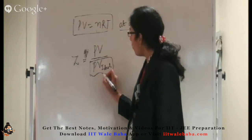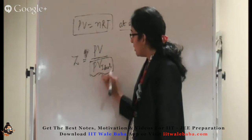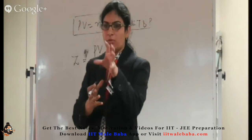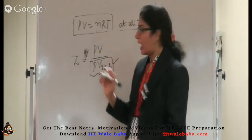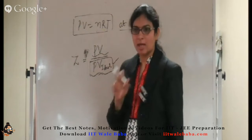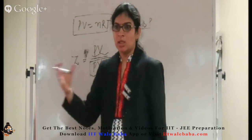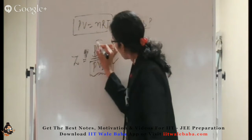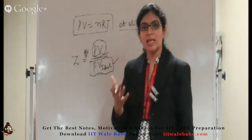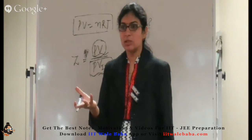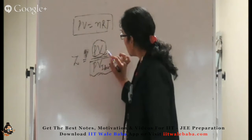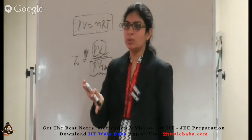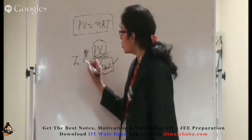PV should remain constant. PV here refers to PV of real gases. When we compare experimental results with theory, we performed experiments on different gases and found that this particular quantity, though it should remain constant, does not. It is sometimes greater than the ideal value, sometimes lesser, and sometimes equal — but in very few cases.